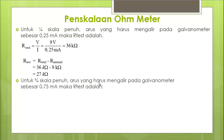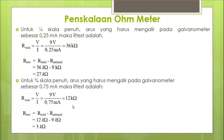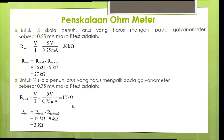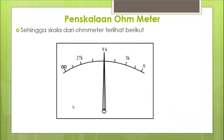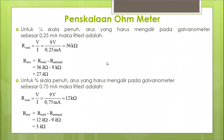Untuk 3/4 skala penuh, arus = 0,75 mA, R test = 3k ohm. Sehingga skala ohmmeter terlihat: posisi nol berada di sebelah kanan (hambatan 0), nilai tidak terhingga di sebelah kiri, dan pada posisi tengah terdapat nilai 9k ohm sesuai perhitungan.